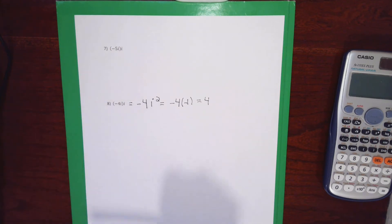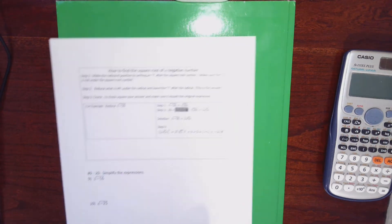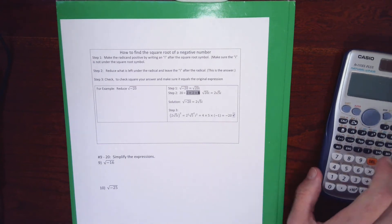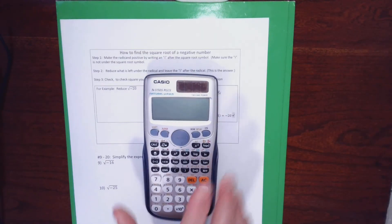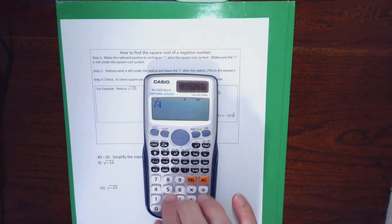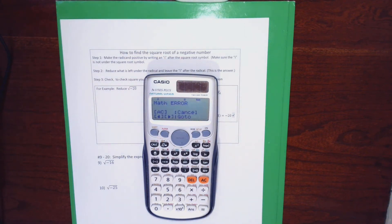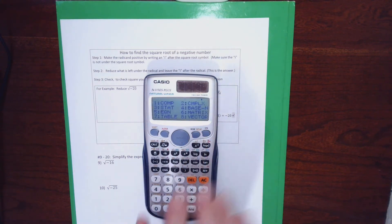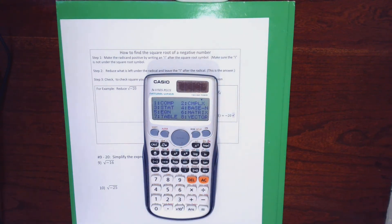That's the first level of what we need to be able to do with i's — just multiply with i's. The next thing we need to be able to do is reduce square roots with i's. My calculator in mode 1 cannot do the square root of negative 20 — it gives an error. But if I hit the mode key and type 2 for complex analysis, the mode that deals with imaginary numbers, my calculator can handle it.